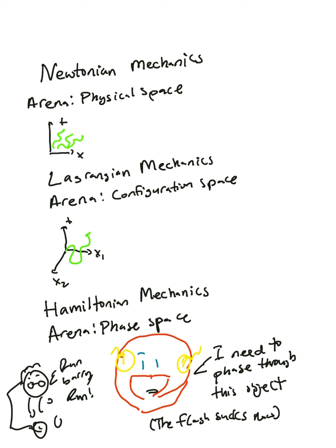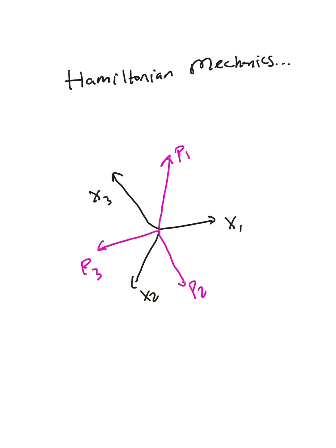Hamiltonian mechanics goes a step further, and adds another axis, not just for each particle position, but for each particle momentum as well. It also deletes the time axis, and treats time as a parameter.